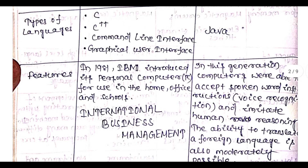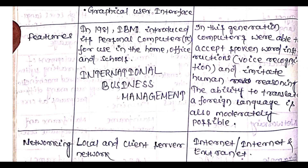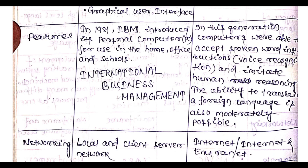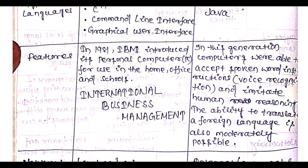Regarding fifth generation computer features: in 1981, IBM introduced its personal computer for use in home, office, and school. In this generation of computers, we are able to accept spoken words — like voice recognition — and imitate human reasoning. The ability to translate foreign languages is also possible.